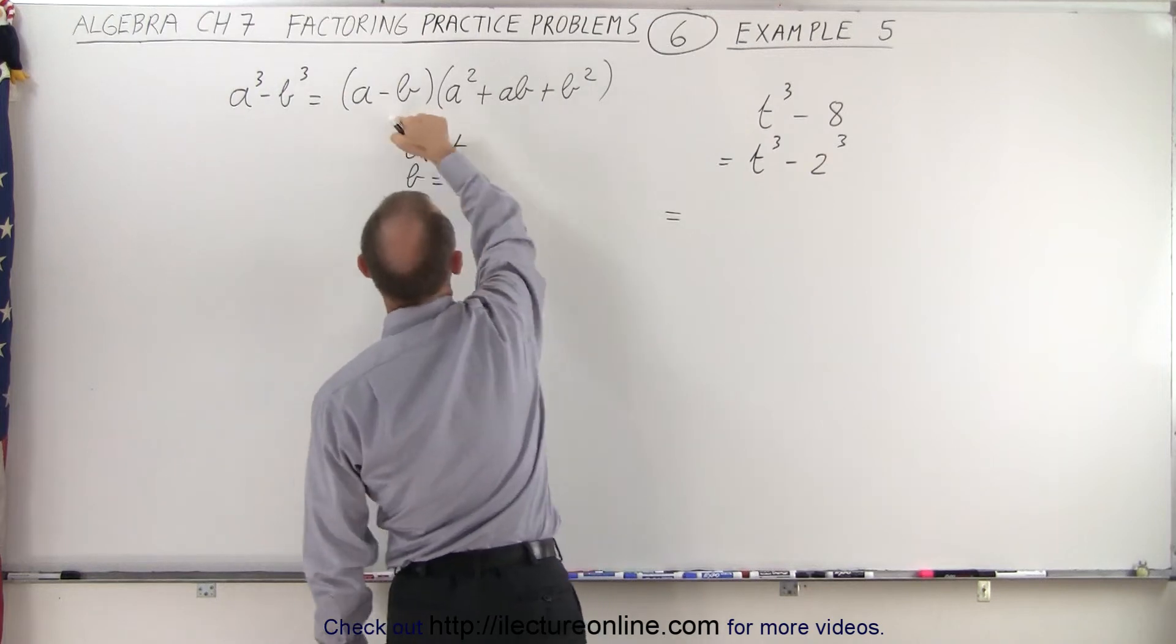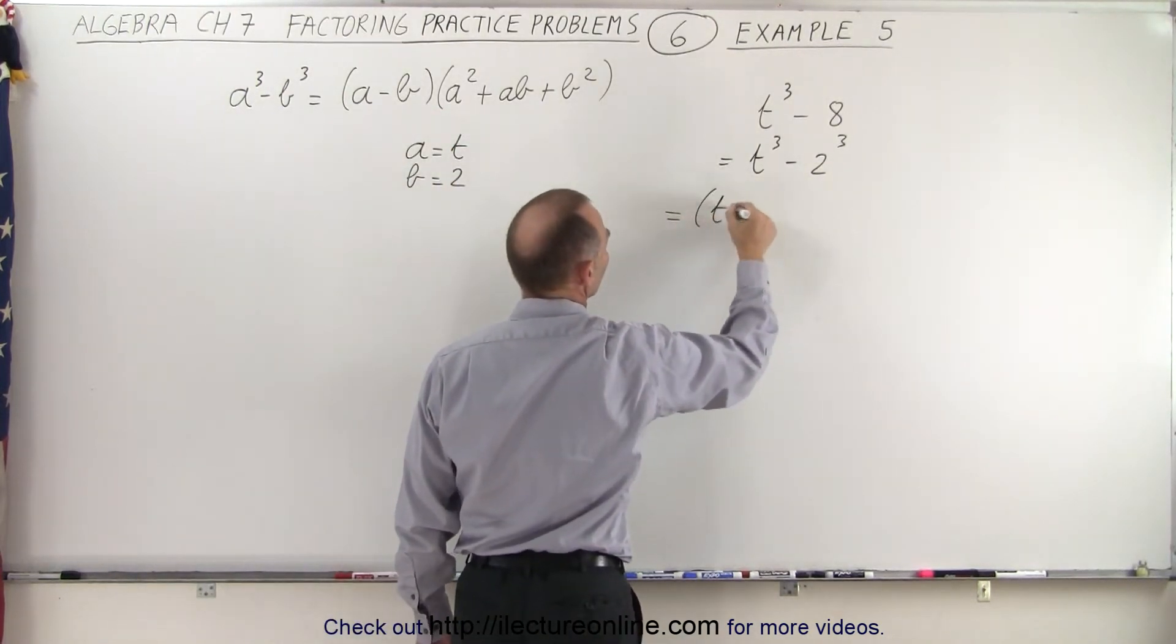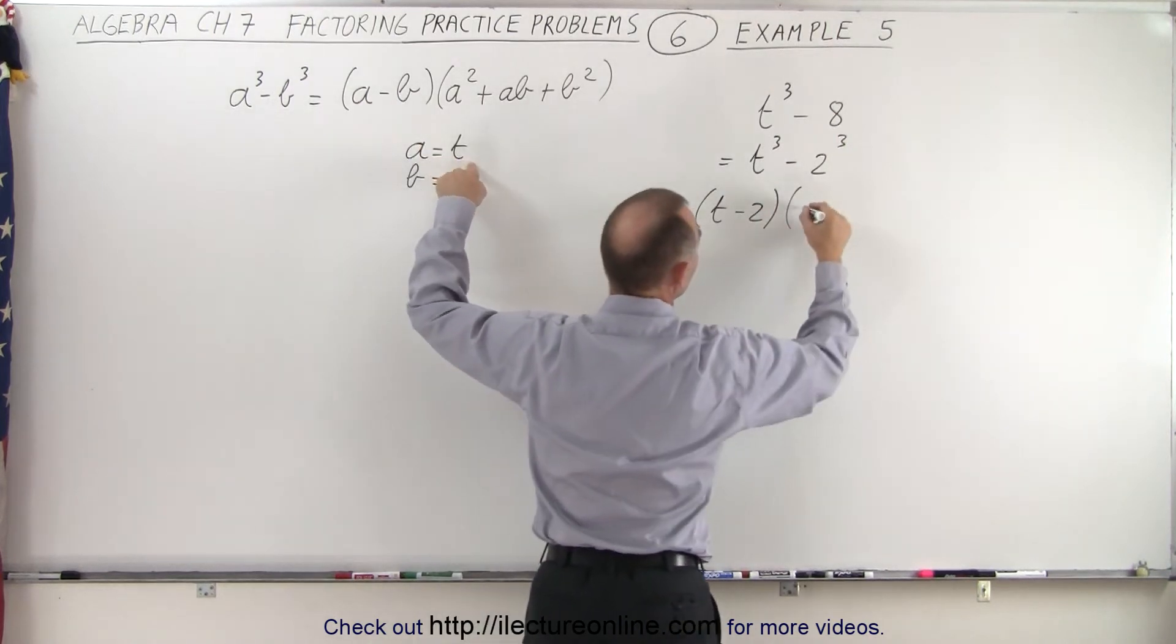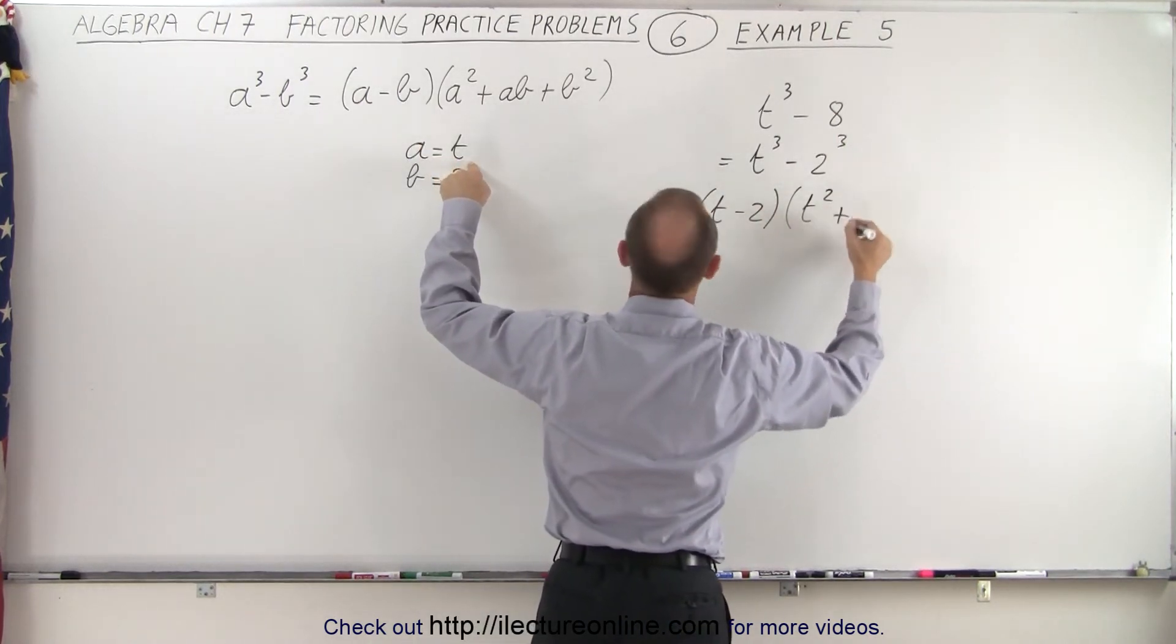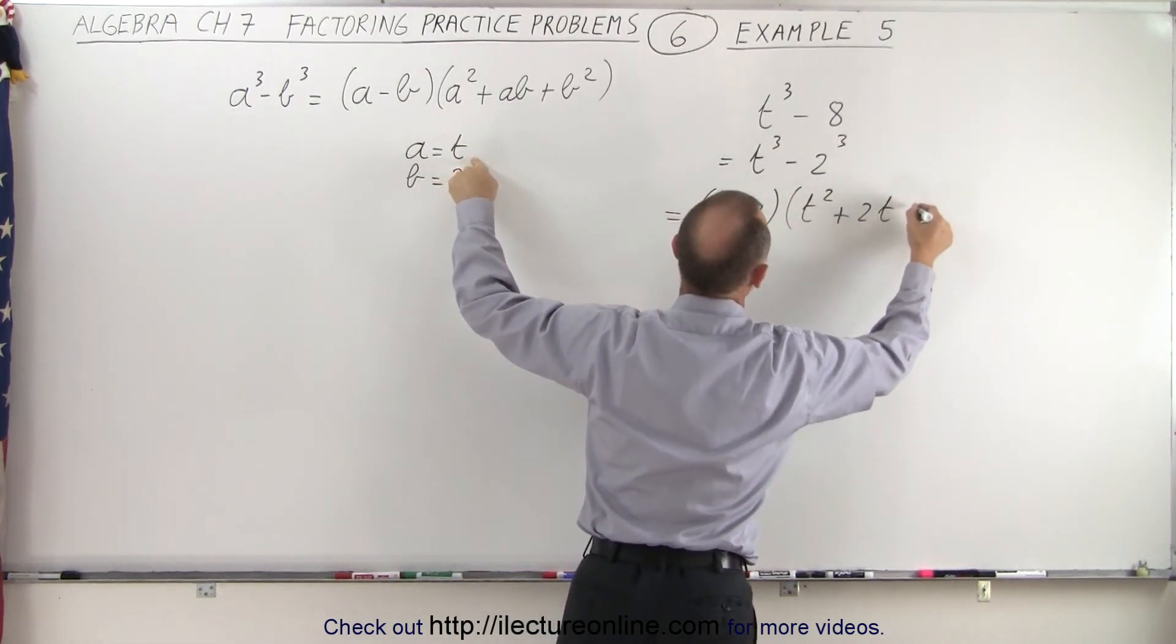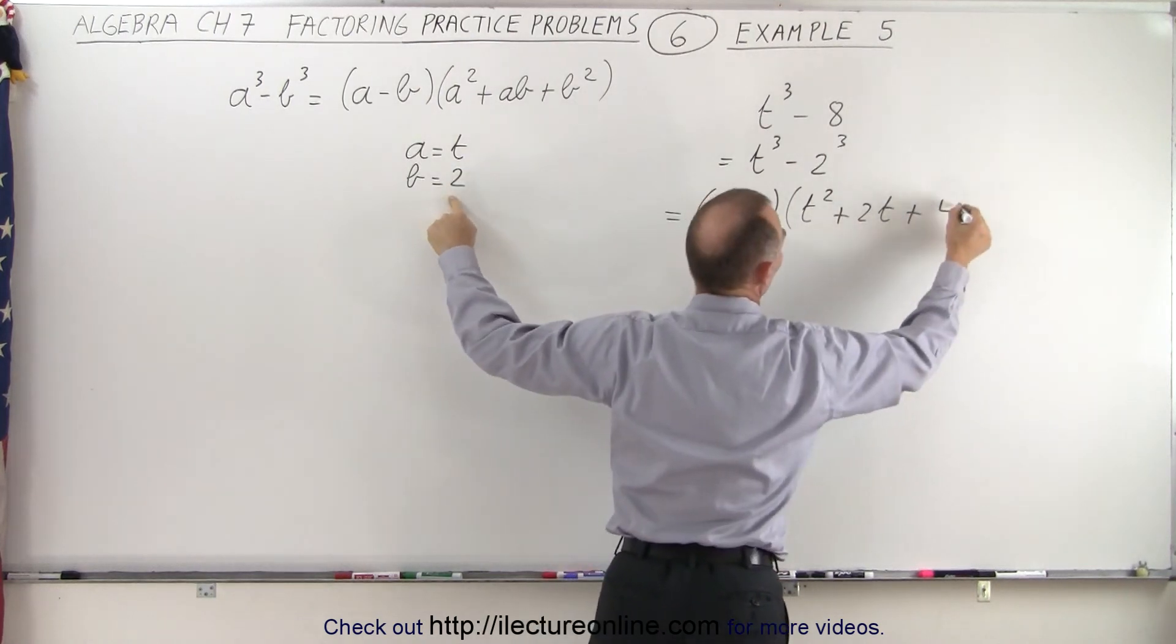So this can now be written as a minus b. Of course, that will be t minus 2 times a squared. So it will be t squared plus a times b. That would be 2 times t. And then plus b squared. In this case, it would be 2 squared or 4.